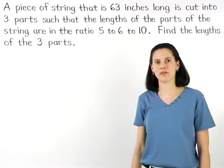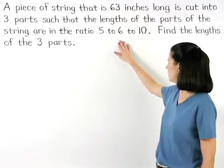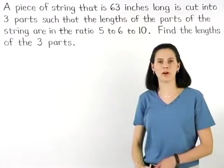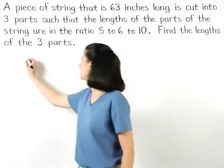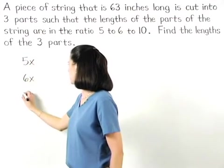Since the three parts of the string are in the ratio 5 to 6 to 10, we can represent the parts as 5x, 6x, and 10x.